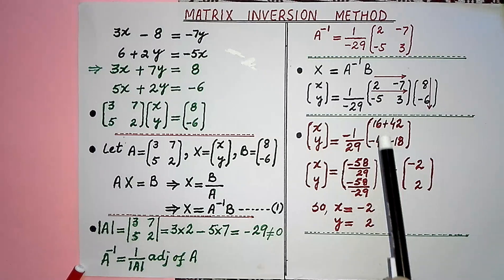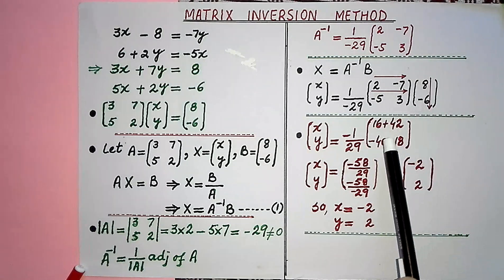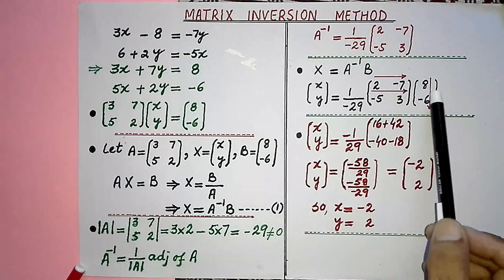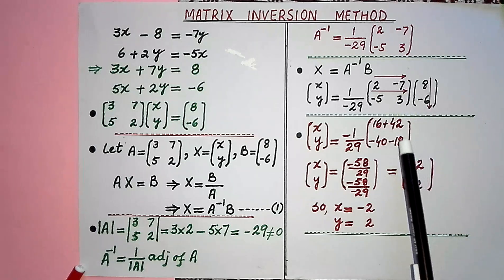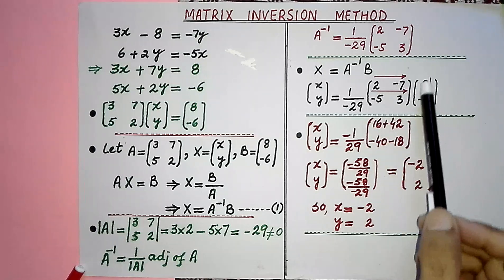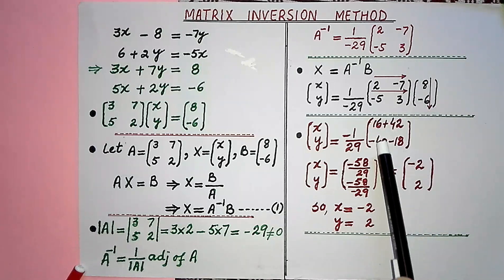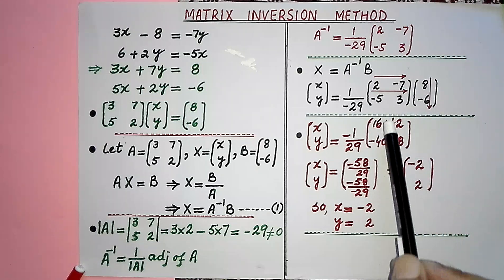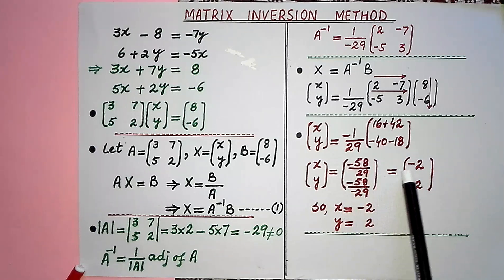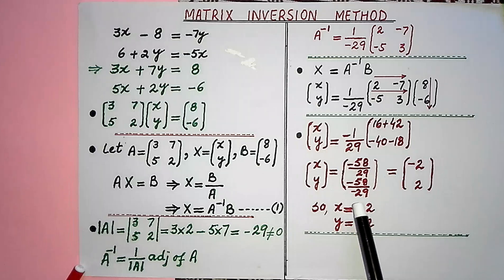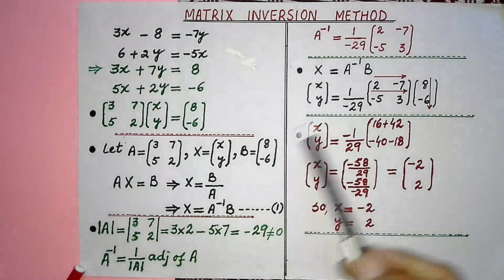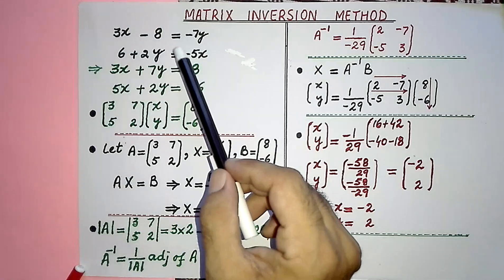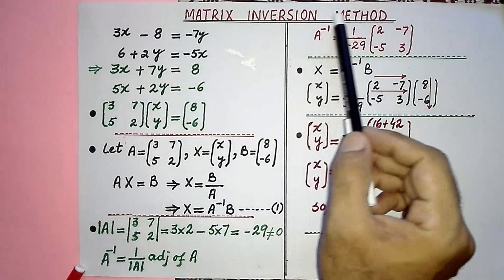In the fifth and final step, we do multiplication of matrices. The first row is multiplied by the first column — tail is multiplied by tail, plus head is multiplied by head. Then the second row is multiplied by the first column — tail multiplied by tail, plus head multiplied by head. After this, we do the simplification process, and at the end we find the values of the variables, which gives us the required solution. That is how we can solve a system of linear equations in two variables by the matrix inversion method.